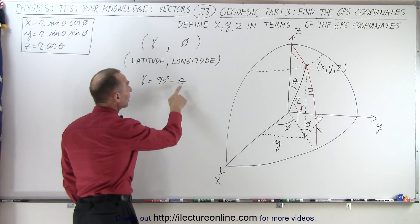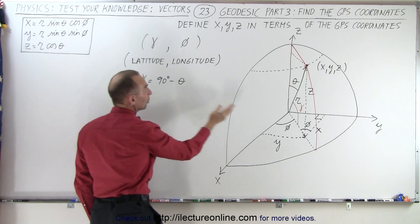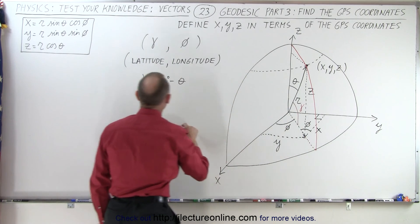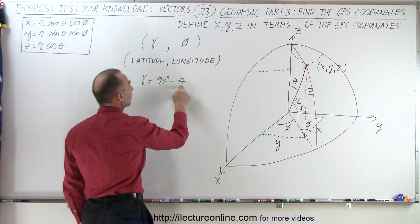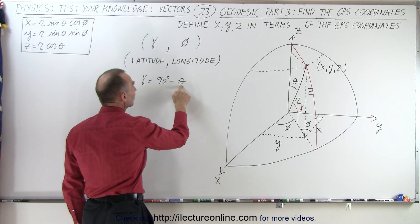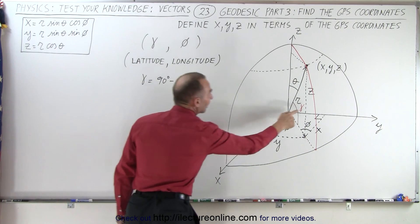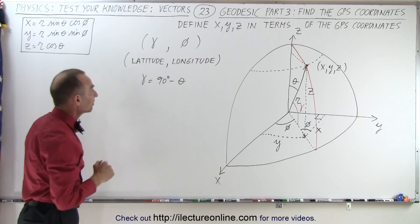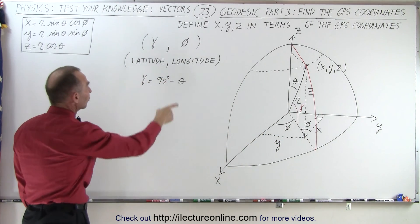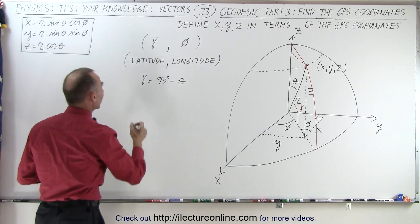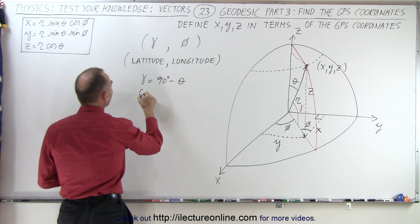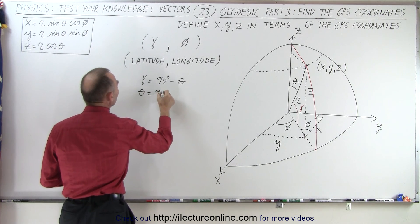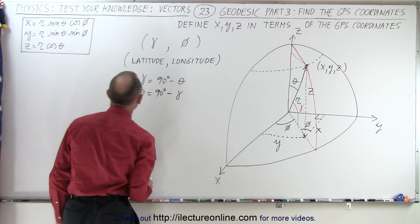Let's check that for a moment. If theta is equal to zero, lambda will be 90 degrees — that makes sense. And if theta is equal to 90 degrees, then lambda will be zero degrees and we'll be at the equator — so that makes sense. So let's convert this: theta is therefore equal to 90 degrees minus lambda.